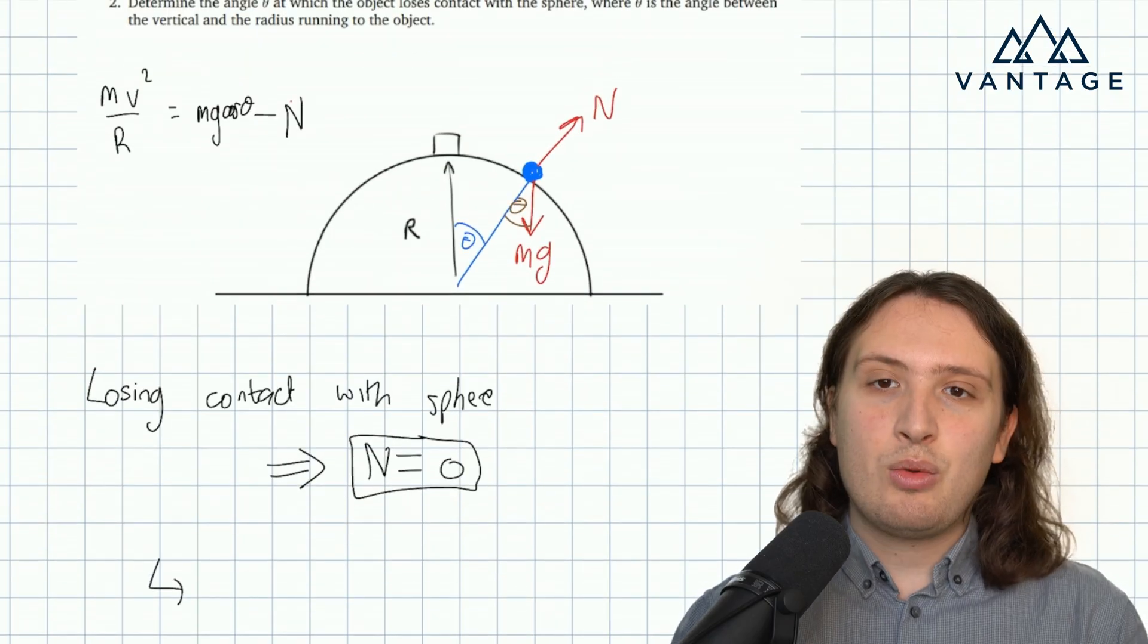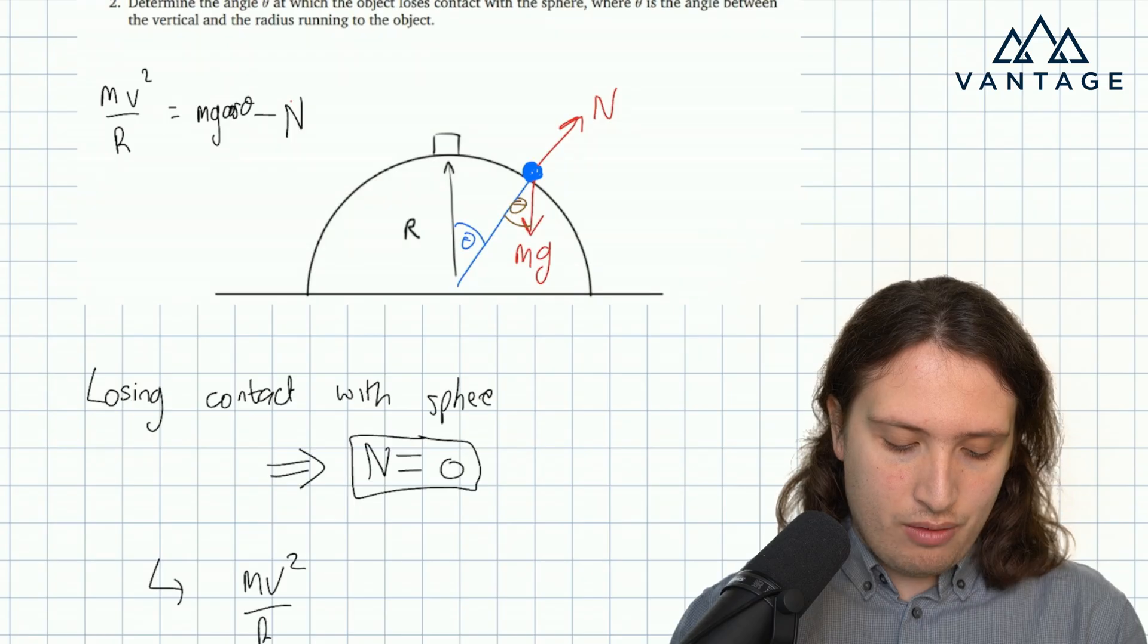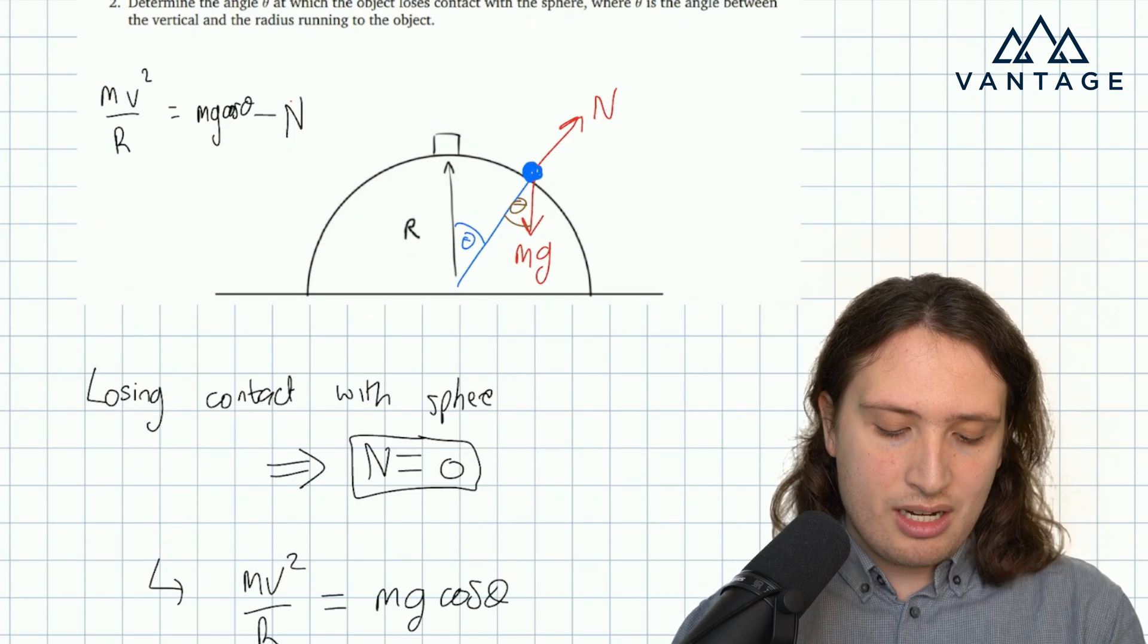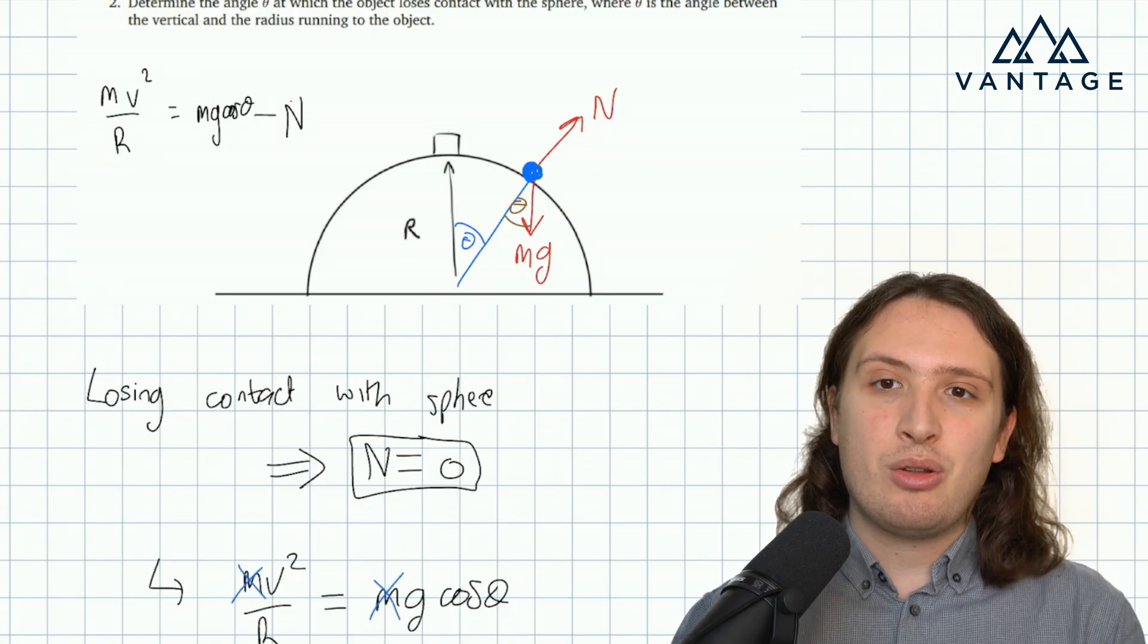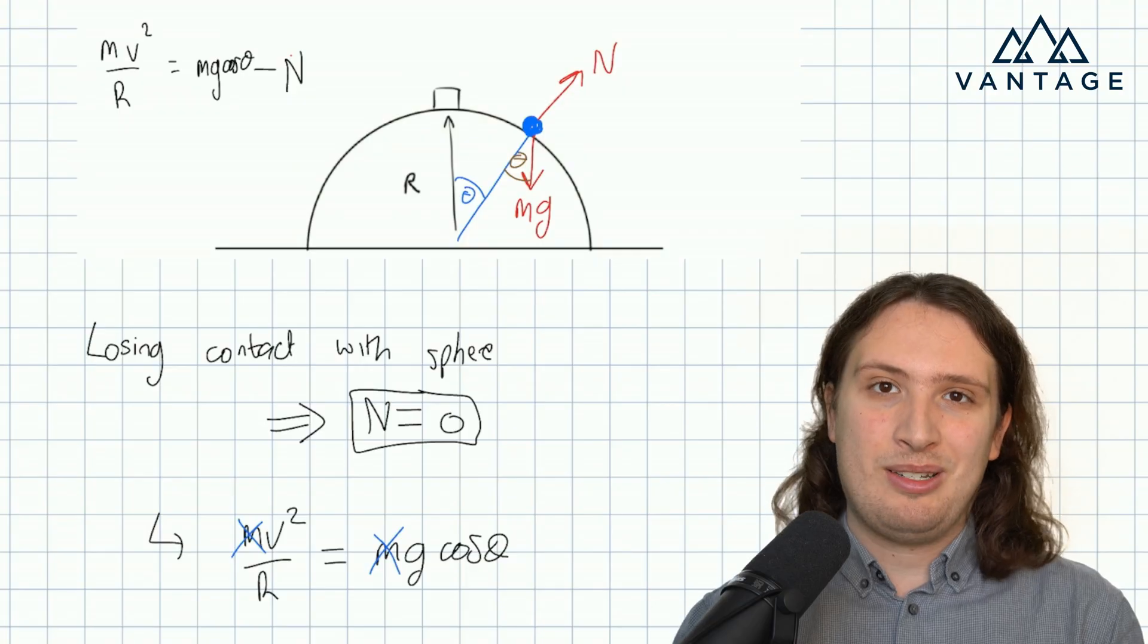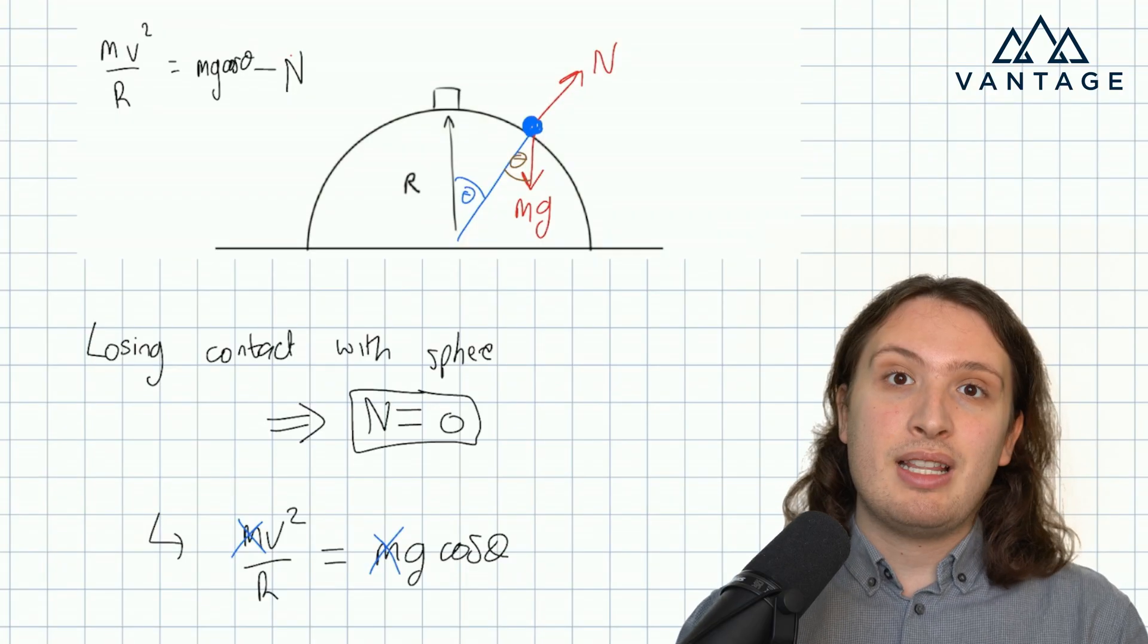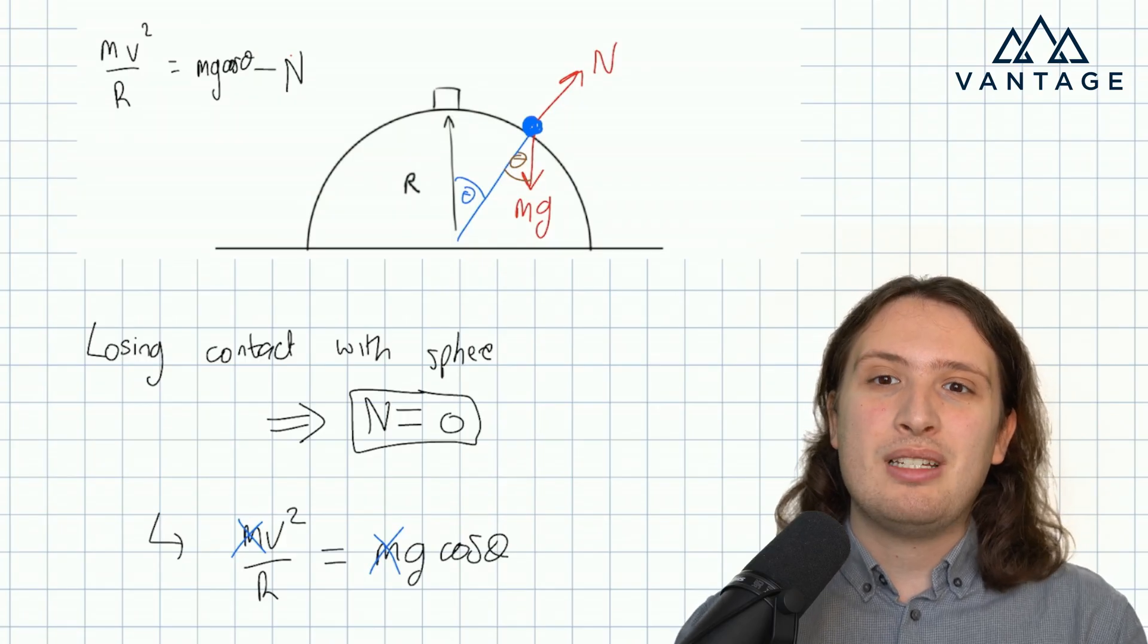So I can plug n equals zero into the equation and I get mv squared over r equals mg cos theta. And we can see the m cancels. So it's nice in an interview to comment on these sorts of things, the fact that m has cancelled, the mass of the object is actually not going to be a factor in the answer. It's nice to volunteer these sorts of reflections without being prompted to do so.